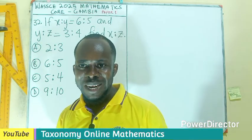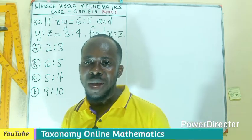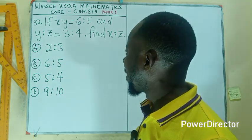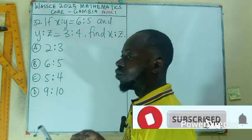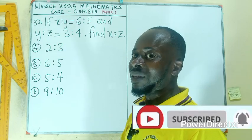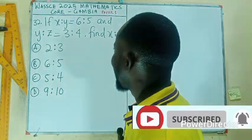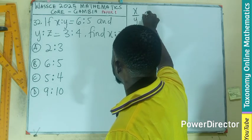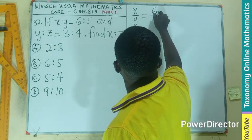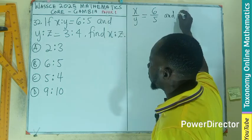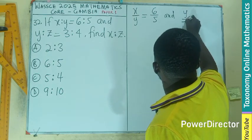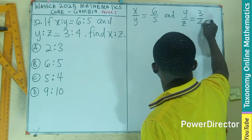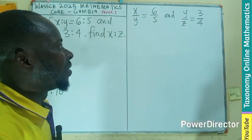Welcome to question number 32, still on Gambia Core Mathematics 2025. If x is to y — ratio can be written as a fraction — so x divided by y equals 6 is to 5. We also have y is to z, which is 3 is to 4. We have to find x is to z.